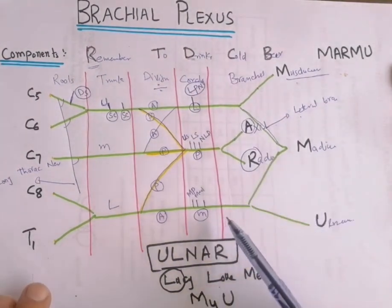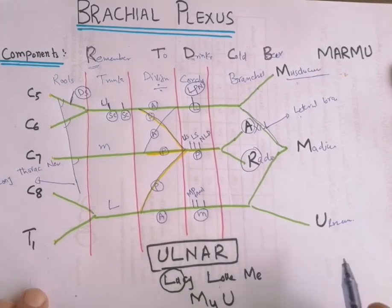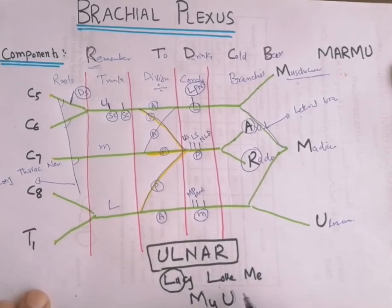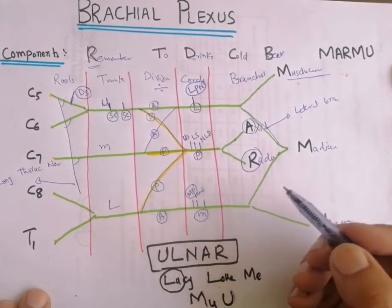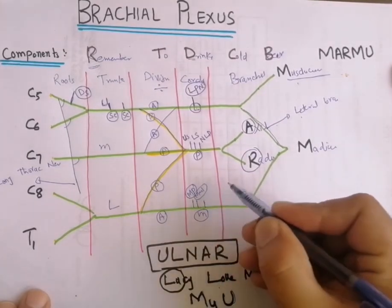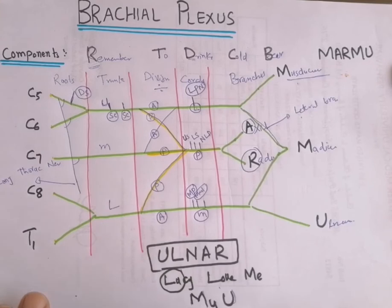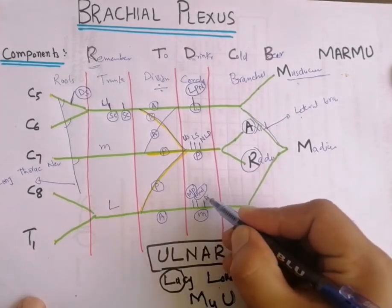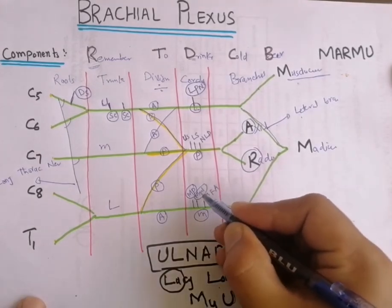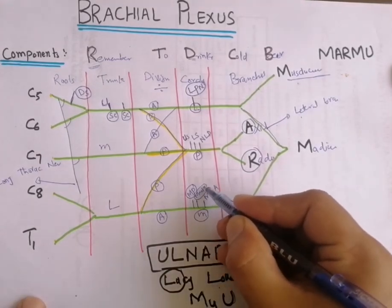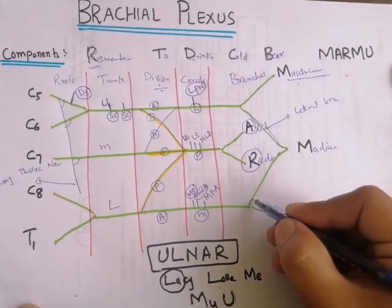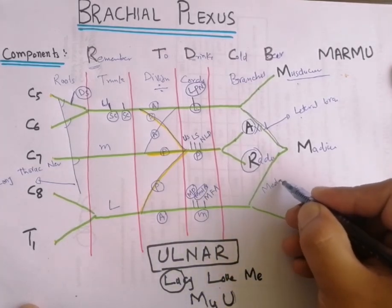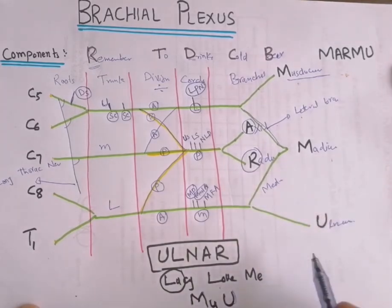For the medial cord, the mnemonic is M4U: the first M is medial pectoral nerve, the second M is medial cutaneous nerve of the arm, the third M is medial cutaneous nerve of the forearm, and the fourth M is the medial root of the median nerve.